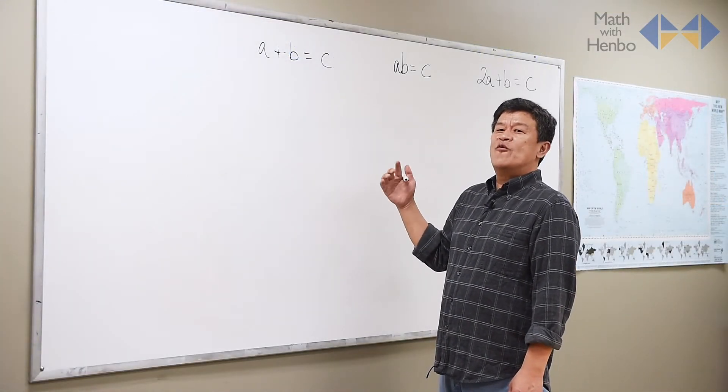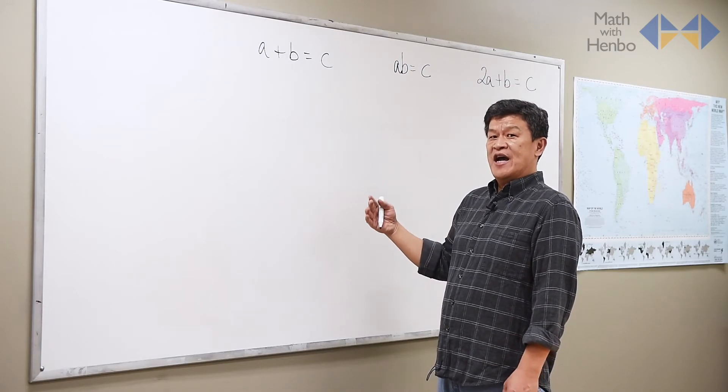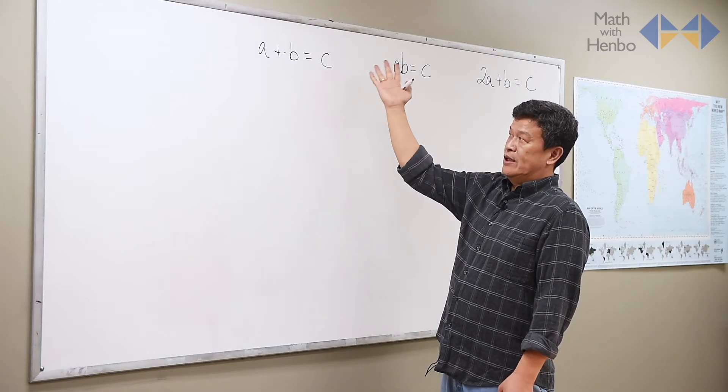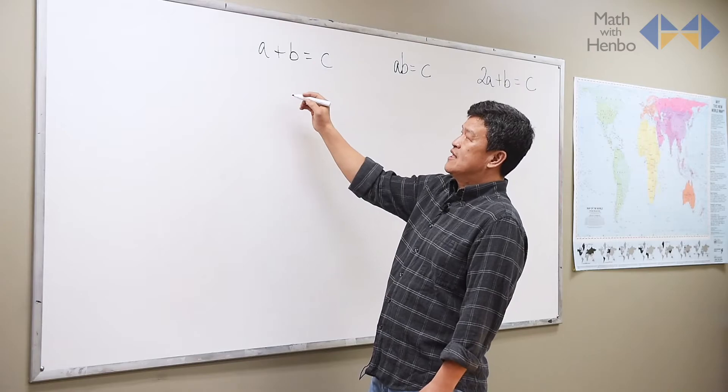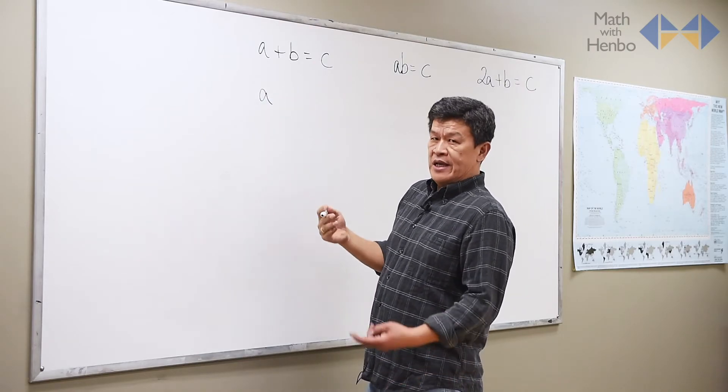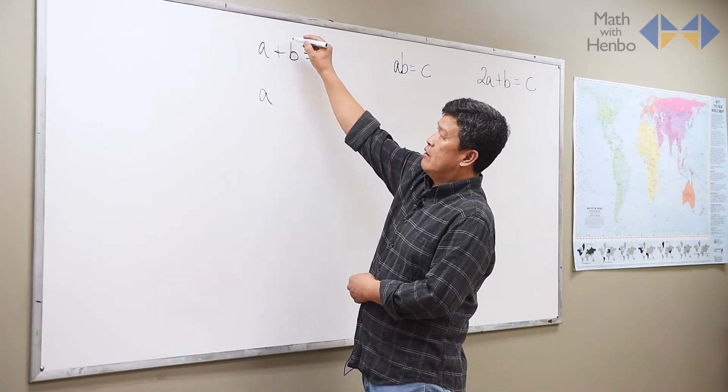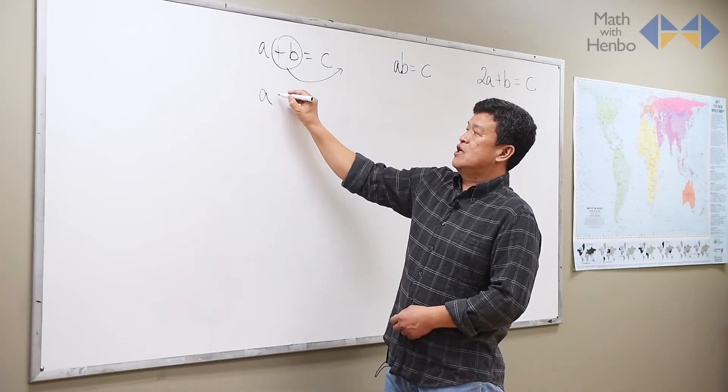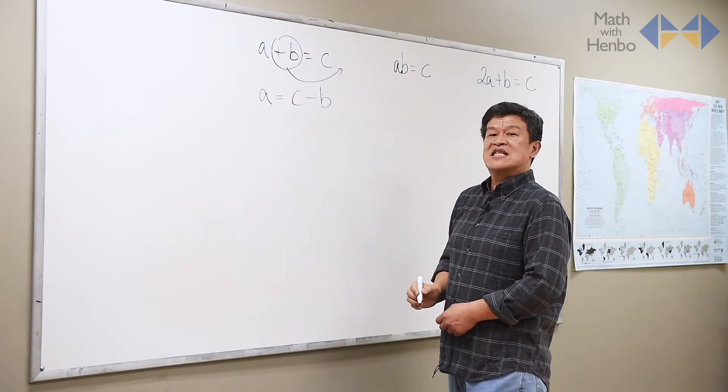Now, what happens when no value is given at all for any of the letters? And you have to find what the equation is in relation to what's given to you there. For example, if I want to find what A is in relation to B and C, the answer is still isolate the A as we did earlier with the numbers. Here, just take the B over the equal sign or across the equal sign, and it becomes its opposite operation. So A becomes C minus B.